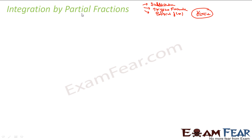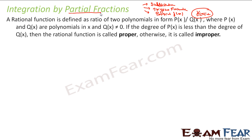Now let us understand a new method called partial fraction. In this method, a rational function is defined as a ratio of two polynomials in the form p by q, where the degree of p is less than the degree of q. If so, the function is called proper; otherwise it is called improper.